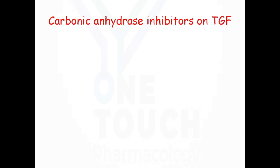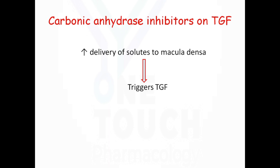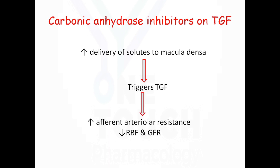Next, carbonic anhydrase inhibitors. Carbonic anhydrase inhibitors increase the delivery of solutes to the macula densa because they inhibit absorption of sodium from the proximal convoluted tubule. This triggers the tubuloglomerular feedback, causing efferent arteriole constriction and a decrease in renal blood flow and glomerular filtration rate.